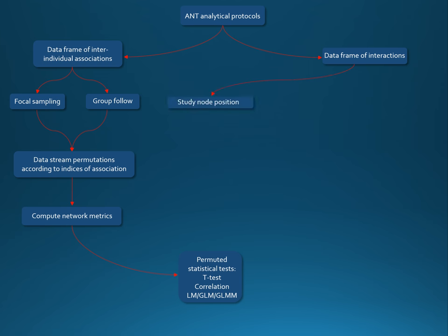For the data of direct interactions, such as grooming in primates, you can first, like in data stream permutation, study node position. But you will do it by computing first node metrics and then realizing node label permutation to finally do a permuted statistical test.